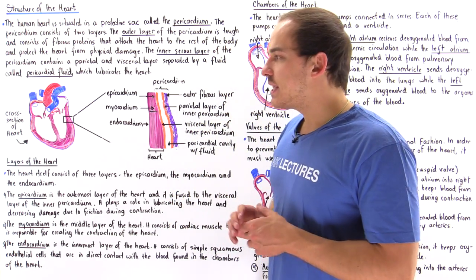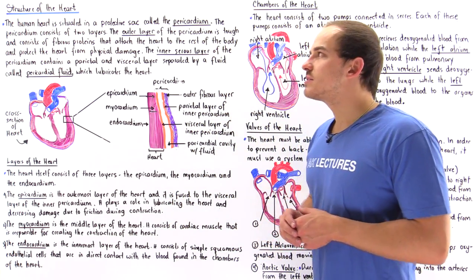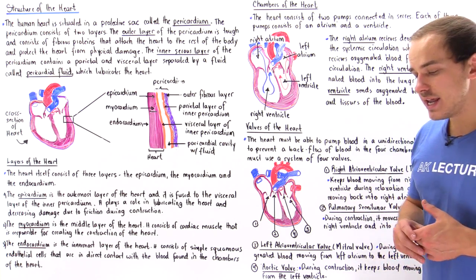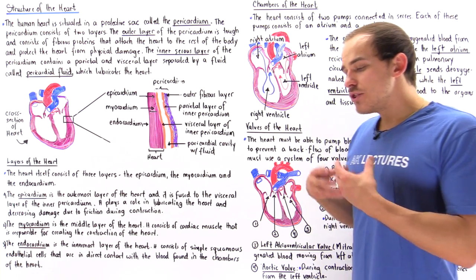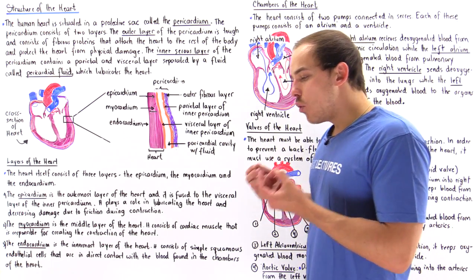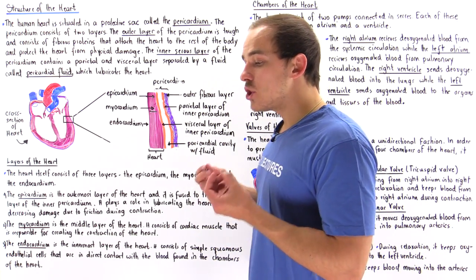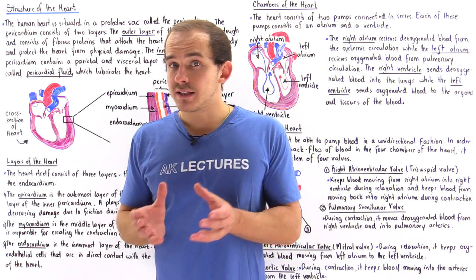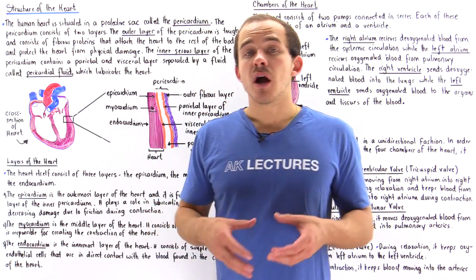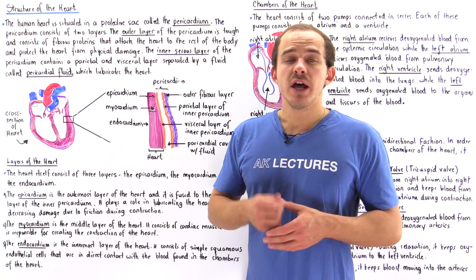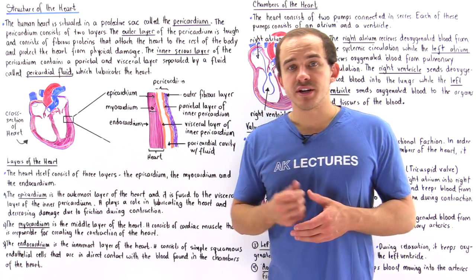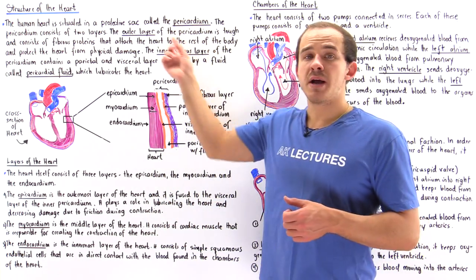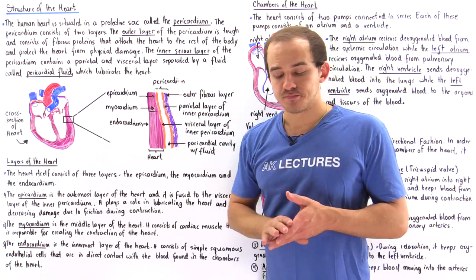Let's begin by discussing the structure of the heart. The heart is an organ located inside a protective covering — a protective sac we call the pericardial sac, or simply the pericardium.